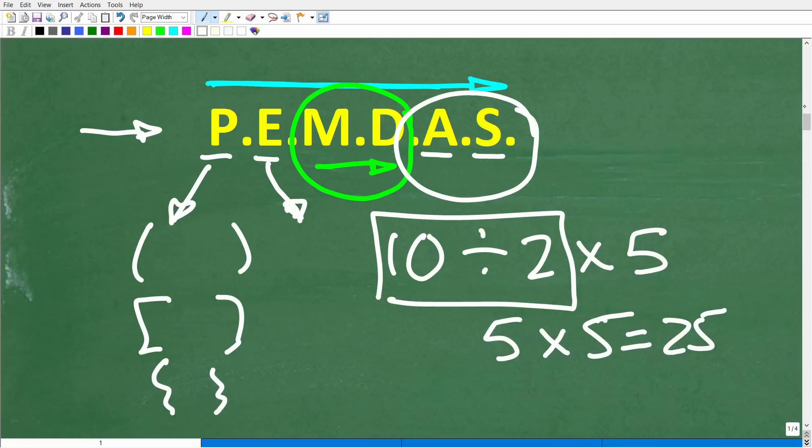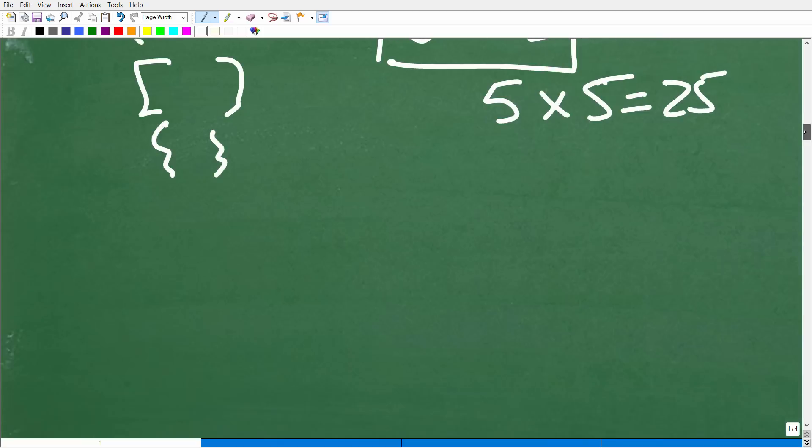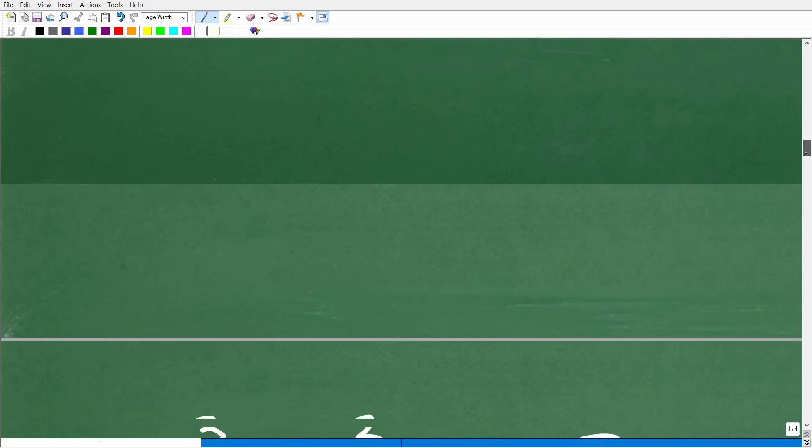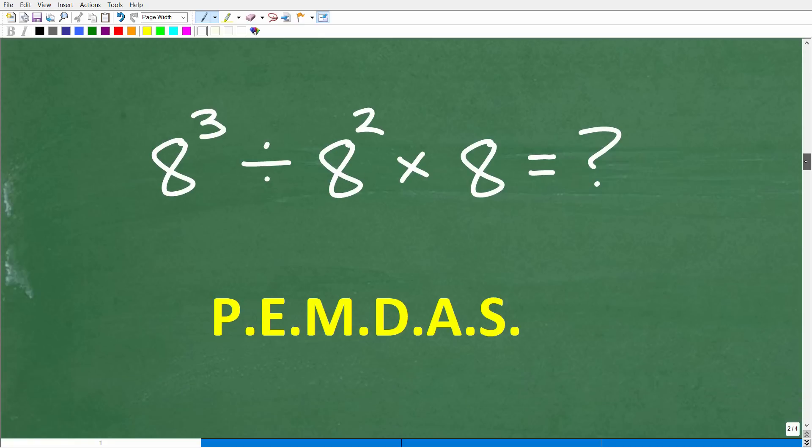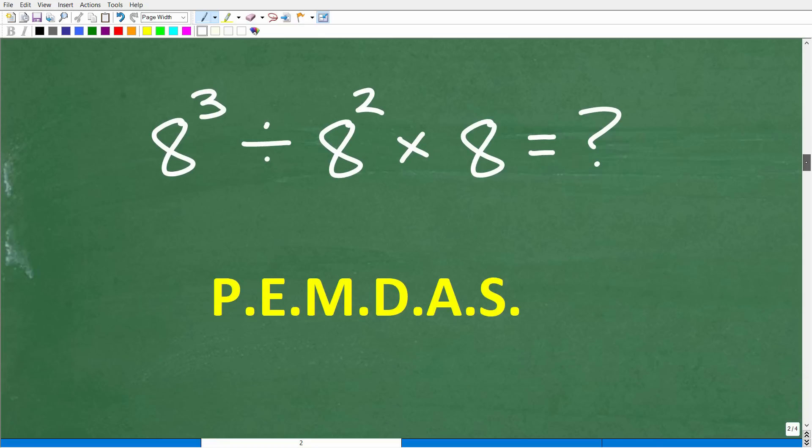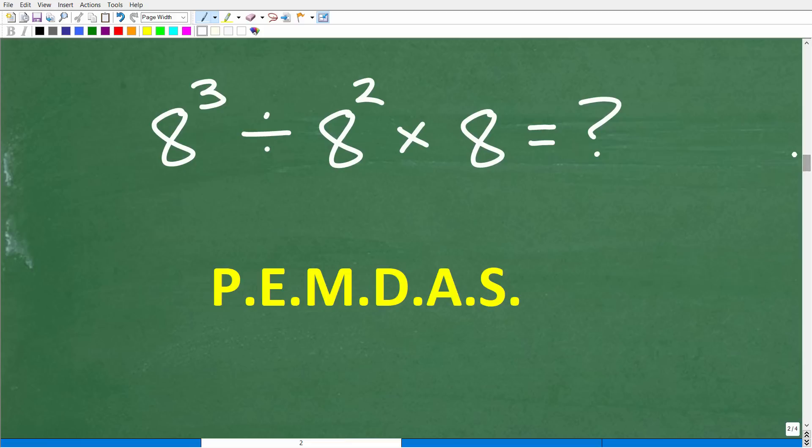All right, so that is the proper order of operation. So now, let's go ahead and apply that to solve the problem. Okay, so here we have 8 cubed divided by 8 squared times 8. Okay, so do we have any parentheses? No. Do we have any exponents or powers? Well, of course we do. So we have these and these. So that's where we need to start.